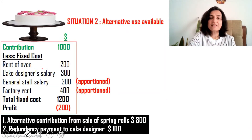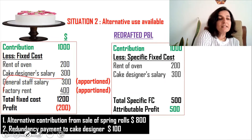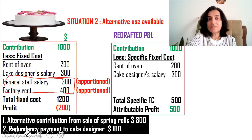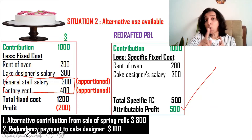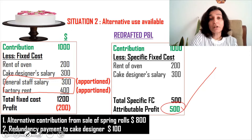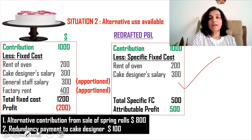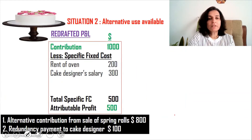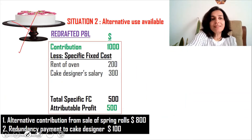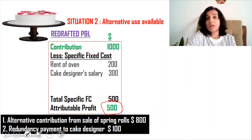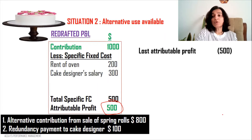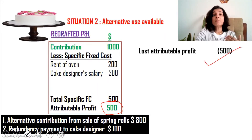The first step is the same as situation one: redraft the P&L account by eliminating general fixed costs, giving an attributable profit of $500. If we close down the cake division, we will definitely lose that attributable profit of $500 — since it is the profit exclusively related to the cake division. I've indicated it as a negative figure because we will be losing it upon shutdown.